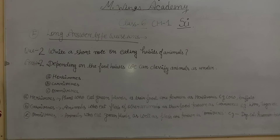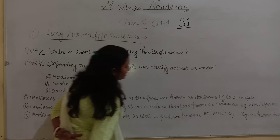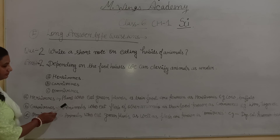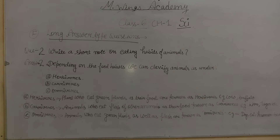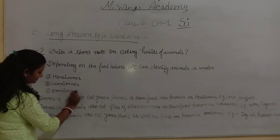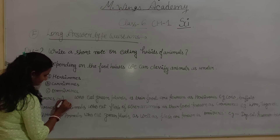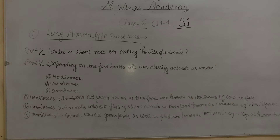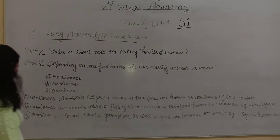Herbivorous — who are they? Animals who eat green plants as their food are known as herbivorous. Examples are cow and buffalo.